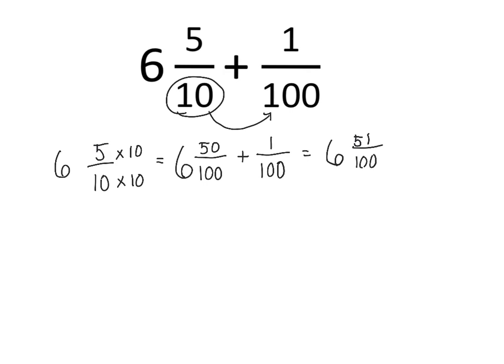But now that this is a mixed number, we want to be able to convert this into a decimal. So we have 6 wholes and 51 hundredths, because the 1 is in the hundredths place.